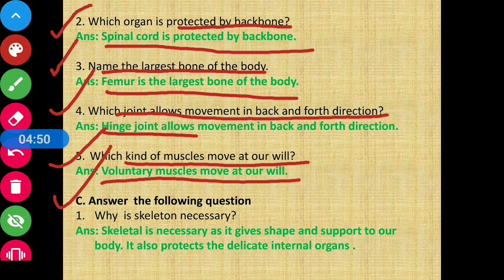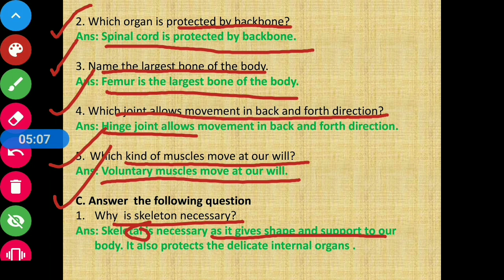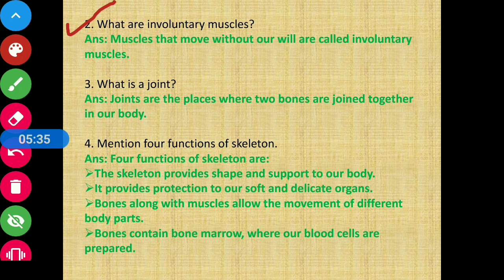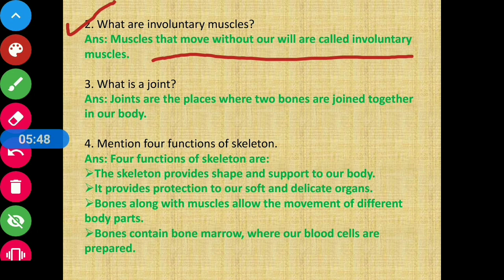Moving on to section C, answer the following questions. Question number 1: why is skeleton necessary? Skeleton is necessary as it gives shape and support to our body, and it also protects the delicate internal organs. That is why skeleton is necessary. Question number 2: what are involuntary muscles? Muscles that move without our will — those muscles are called involuntary muscles.